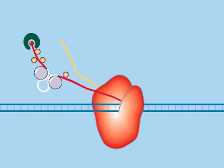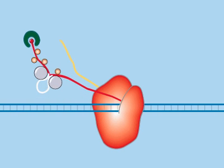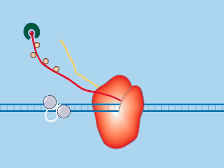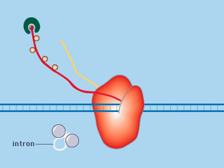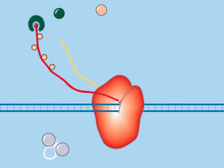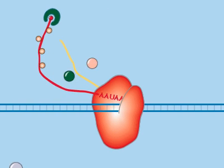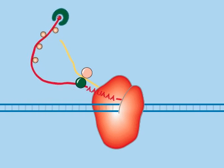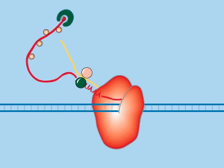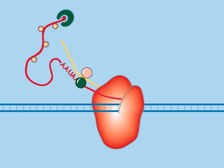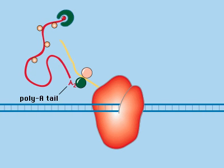The spliceosome, made up of snRNAs and proteins, removes introns from the RNA. At a polyadenylation signal, a protein complex cleaves the mRNA and adds a poly-A tail on the 3' end.